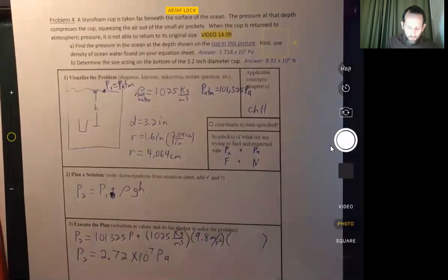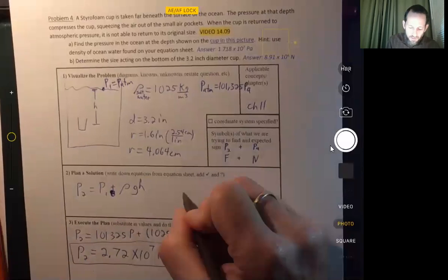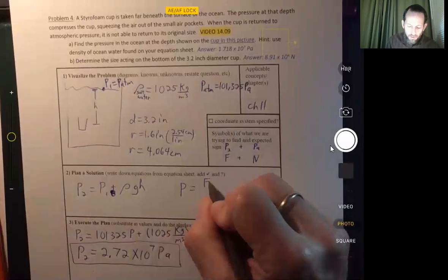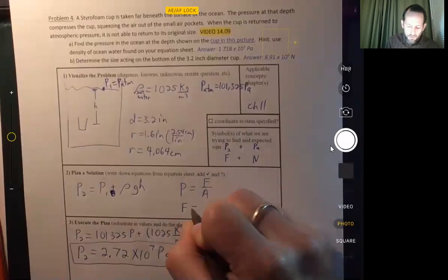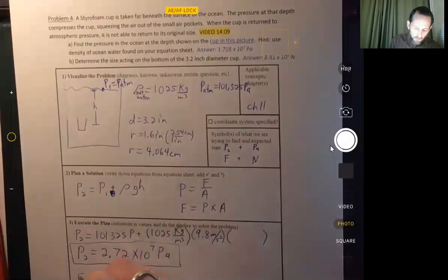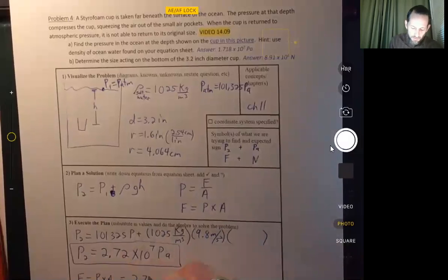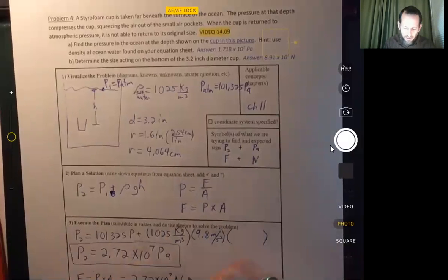And then we know that pressure equals force divided by area. So force equals pressure times area. And so force equals pressure times area. So the pressure, 2.72 times 10 to the seventh pascals or newtons per square meter times the area.